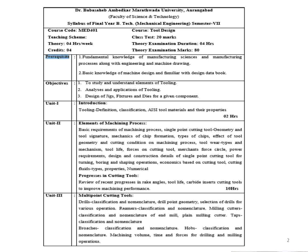In this particular course, 6 units are there in tool design. The first three units will be included in section A and the remaining three units in section B. The first unit is the introduction. In this unit, you are going to study the different types of tooling, the definition of tooling, and in addition to that the AISI classification of the tooling materials and their properties.